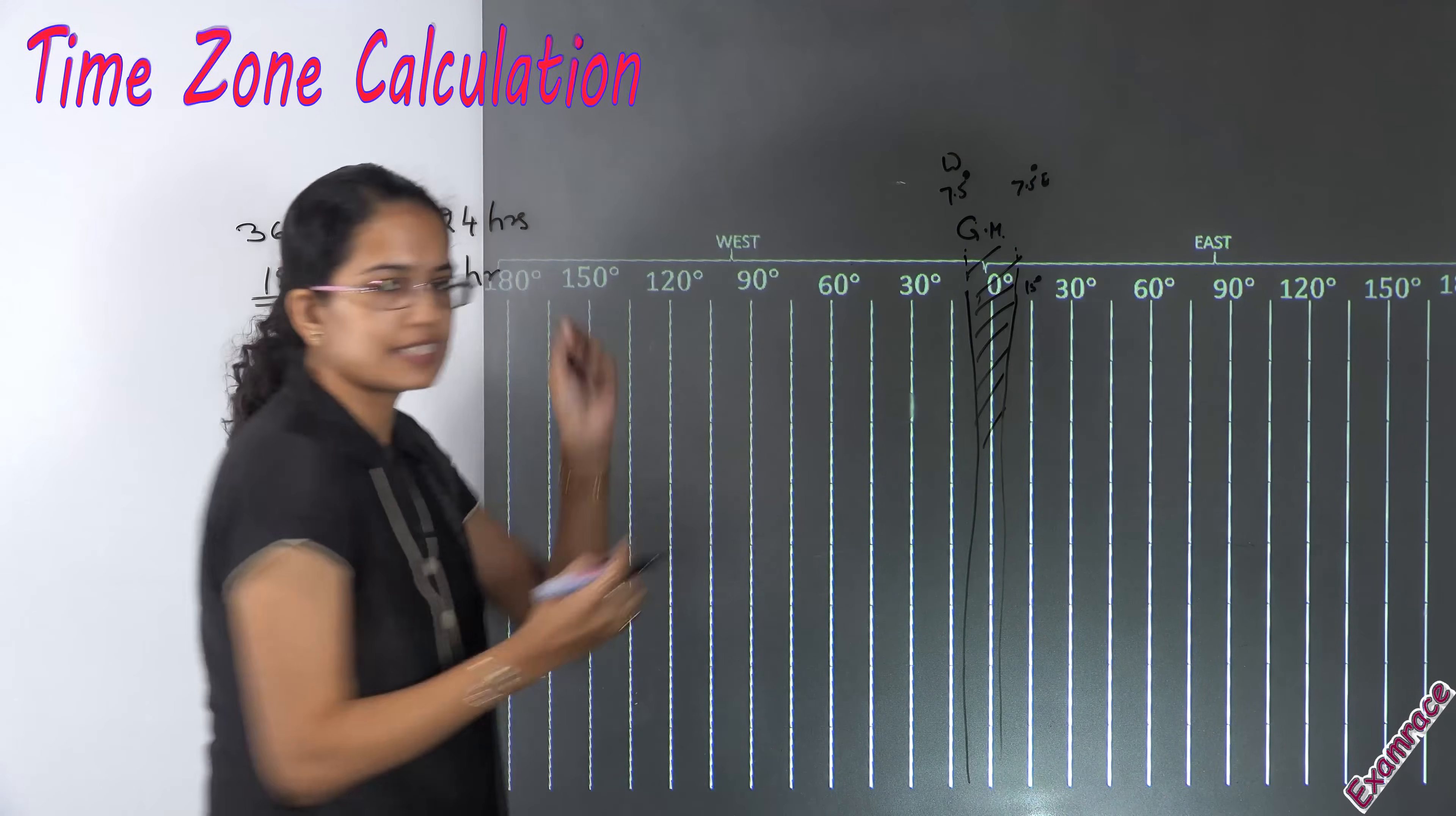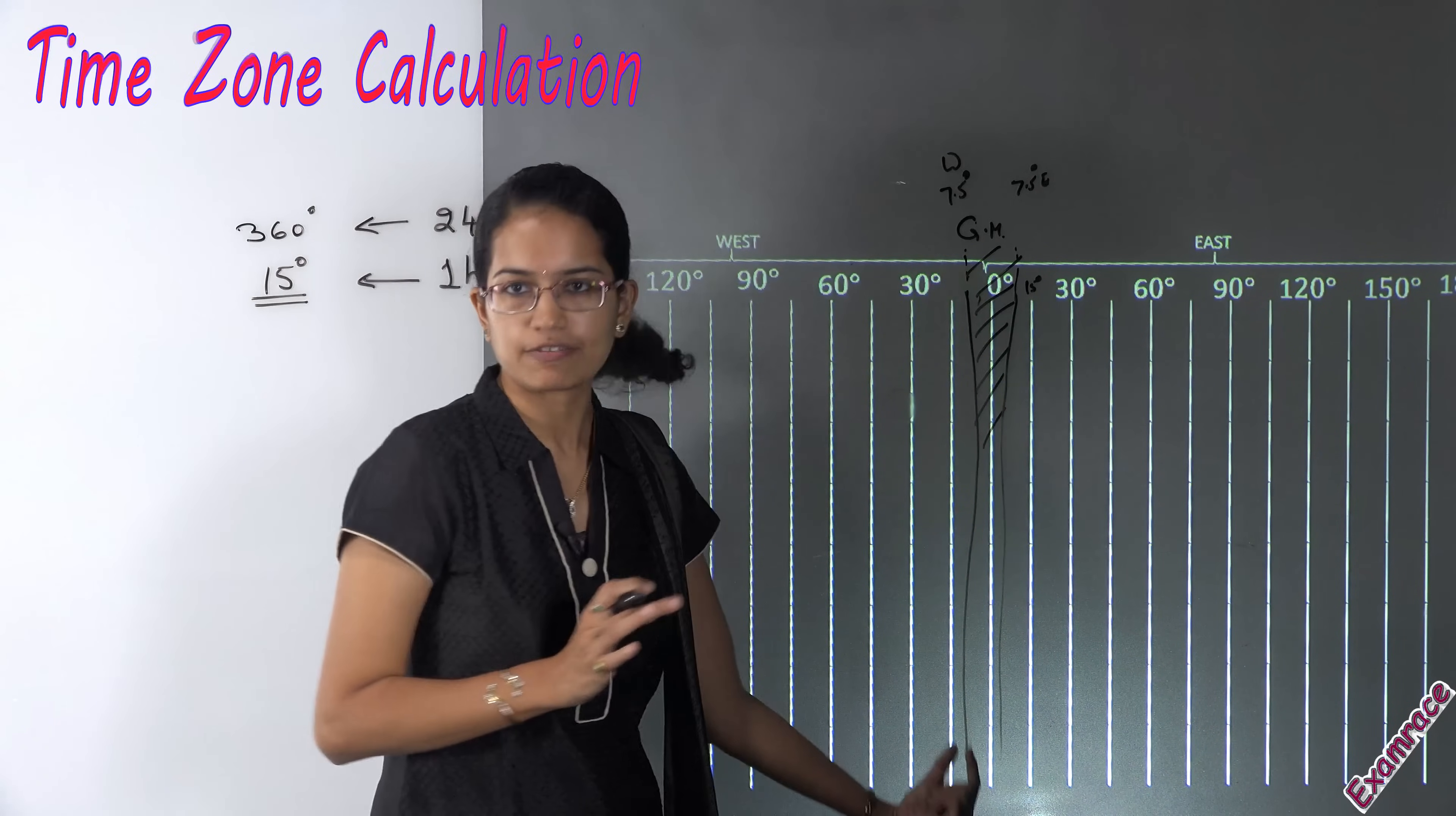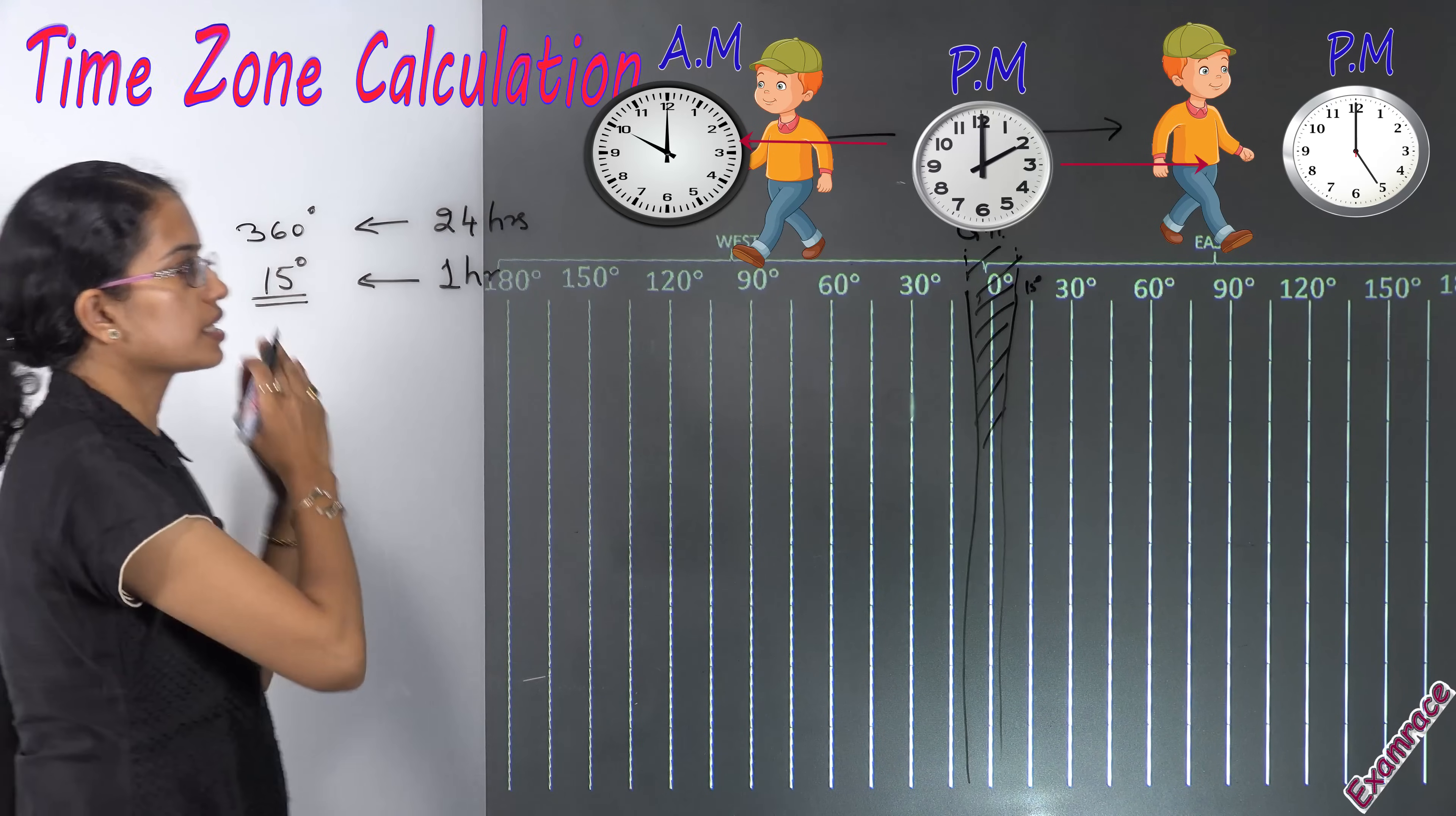So that's not exactly on the 0 degree but a range between plus 7.5 and minus 7.5 would be the range where you would have the Greenwich time or the prime meridian time that would be followed. All the countries lying east to it would have a time zone which would be higher than the Greenwich time and here you would have the time which would be before the Greenwich time.